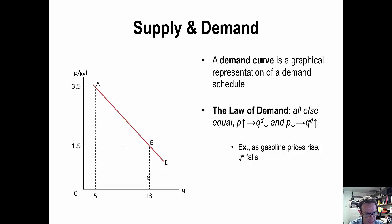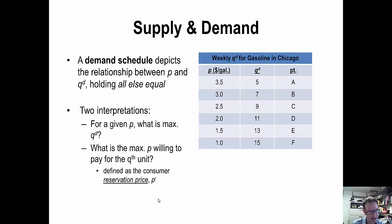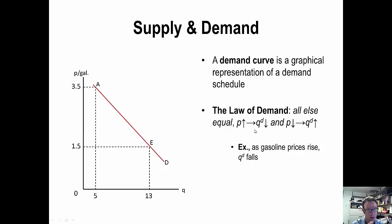If we plot those points on a coordinate system where quantity demanded is along the x-axis and price per gallon is along the y-axis, we get a curve after connecting the dots. At point A, a price of $3.50 is associated with a quantity demanded of 5. At point E, a price of $1.50 is associated with a quantity demanded of 13.